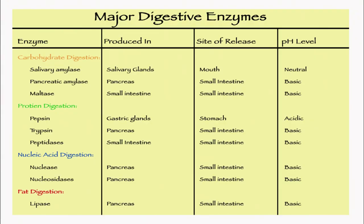This is a summary of the enzymes — where they are produced, their site of release, and the pH required for their activity, which we have already discussed. Except for the stomach, at all other sites the pH required for enzyme activity is basic.